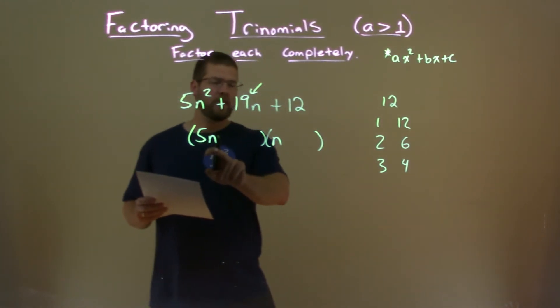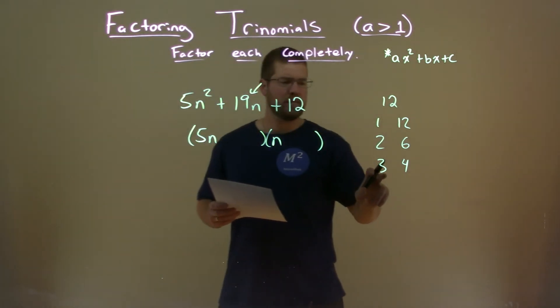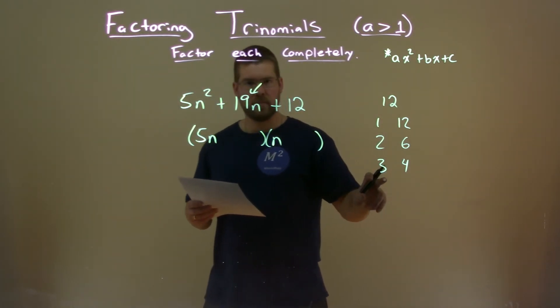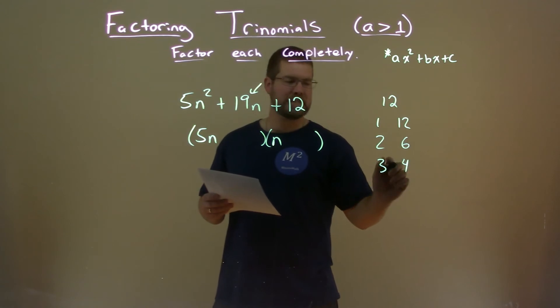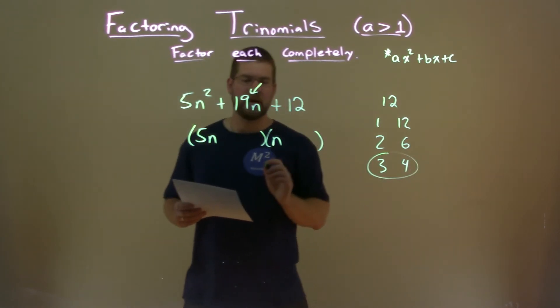But let's keep going down. I try to find which one gets me the closest, okay? Well, 5n times the 3 gets me 15. 15 plus 4 is 19. So that's my goal there.